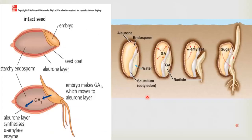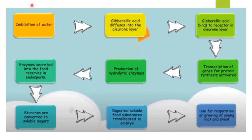As shown in the textbook diagram, when the seed absorbs water, gibberellin is released from the embryo into the aleurone layer. DELLA proteins there are inhibiting mRNA transcription for amylase, but gibberellin destroys the DELLAs, stimulating amylase synthesis. Amylase enters the endosperm, converts starch to maltose and then glucose, which returns to the embryo for aerobic cellular respiration. As a flowchart: water imbibition → gibberellic acid diffuses to aleurone layer → transcription of amylase genes activated → amylase secreted into endosperm → starch converted to soluble sugars → translocated to embryo → used for respiration and growth.